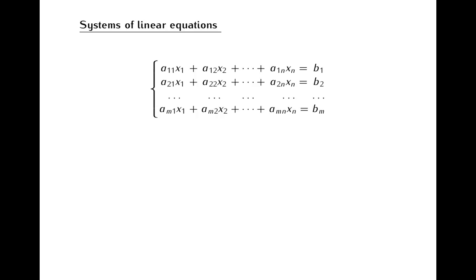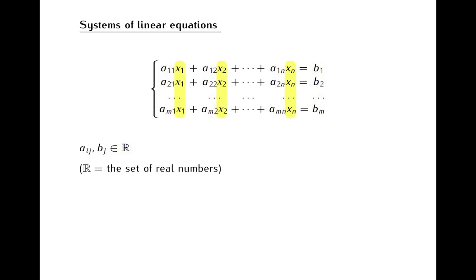A starting point to the study of linear algebra are systems of linear equations. Here is how a generic system of such equations will look like. These a's and b's are the coefficients of the system, which are some constant real numbers. This thickened R will always denote the set of all real numbers. These x1, x2, and so on are the variables of the system.